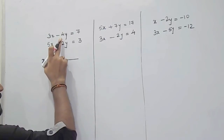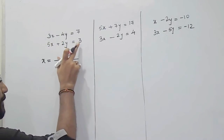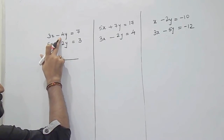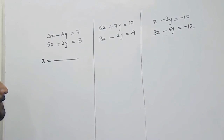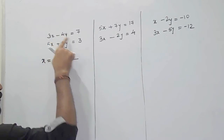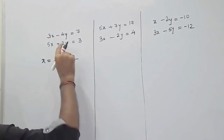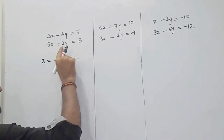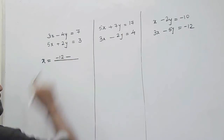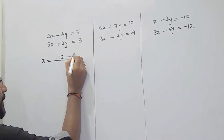Now, how do you get the numerator? First, cross-multiply the coefficient of y of the first equation and the constant term of the second equation — that is minus 4 into 3, which is minus 12. Then cross-multiply the coefficient of y of the second equation and the constant of the first — that is 2 into 7, which is 14.